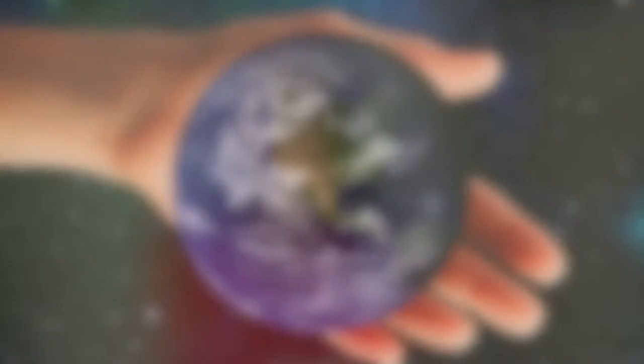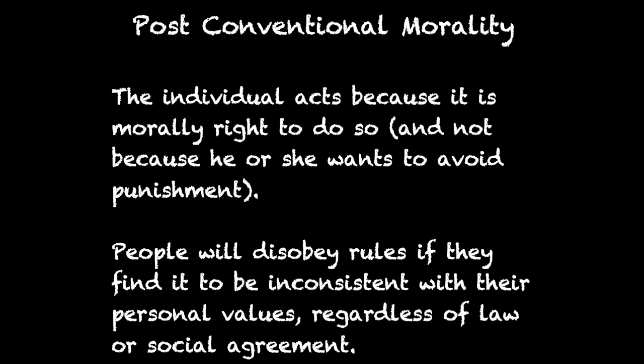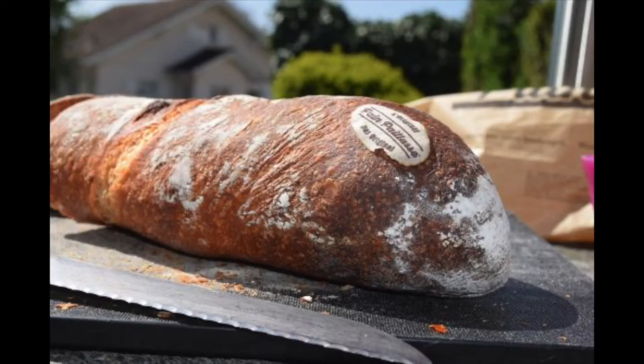Here we are at level three: post-conventional morality. Think of universal ethical principles. The individual acts because it is the morally right thing to do — not because they want to avoid punishment, but because they genuinely believe it's good for humanity. They'll often disobey certain rules if they find those rules inconsistent with their own personal values. A great example: was it wrong to steal a loaf of bread to feed your starving family? At the post-conventional level, people would say not necessarily, because they were doing it to provide for their family.